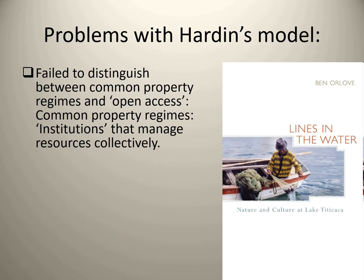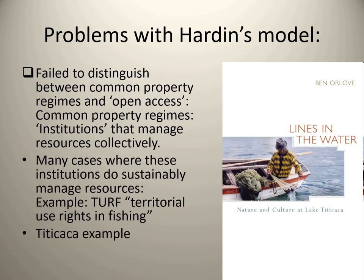Hardin failed to distinguish between common property regimes and open access. Common property regimes are institutions that manage resources collectively. The resource is not the same as the property regime. For example, Lake Titicaca might look open access or unregulated, but the lake's fisheries are regulated by lakeshore villagers through an institution called TERFs — territorial use rights in fishing — where each village has access to their own area of the lake. They manage the resource collectively. This is a group of organized people — an institution — that manages resources sustainably.